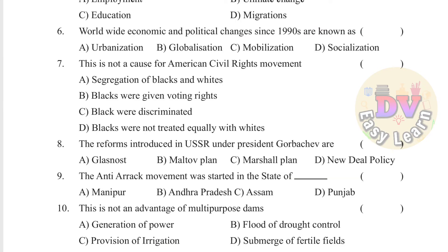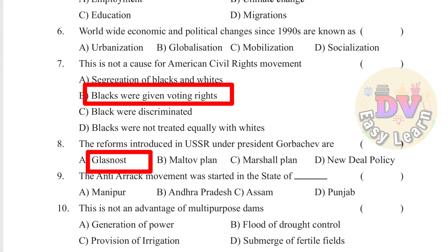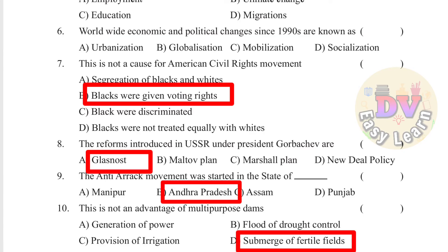Question 7: This is not a cause for the American Civil Rights Movement — Answer: Blacks were given voting rights. Question 8: The reforms introduced in USSR under President Gorbachev. Question 9: The anti-Iraq movement was started in the state of. Question 10: This is not an advantage of multi-purpose dams — Answer: Submergence of fertile fields.